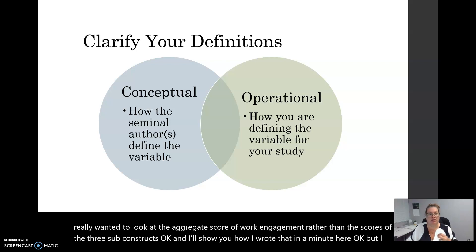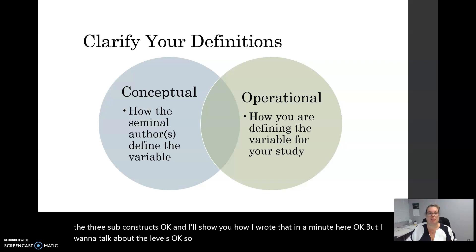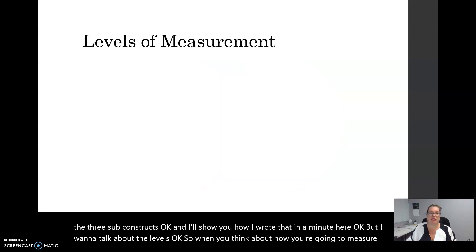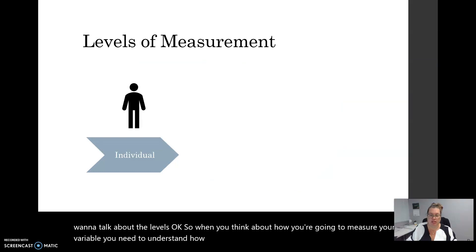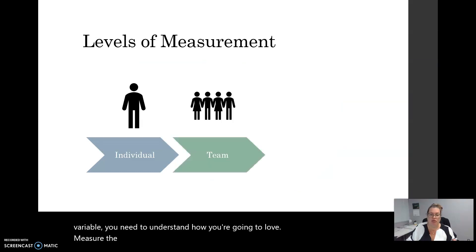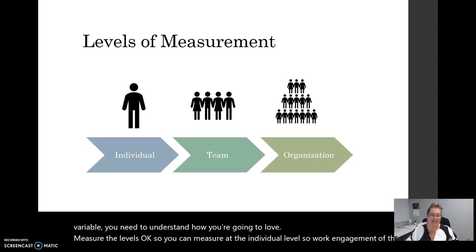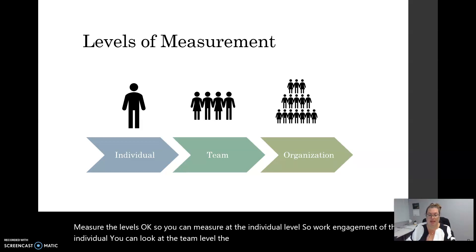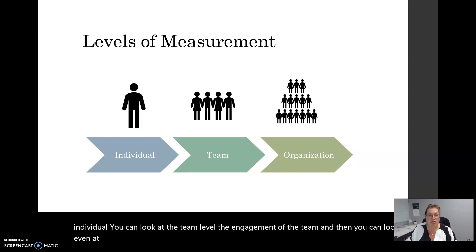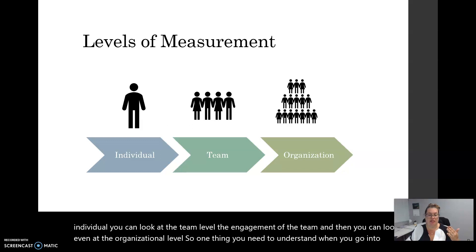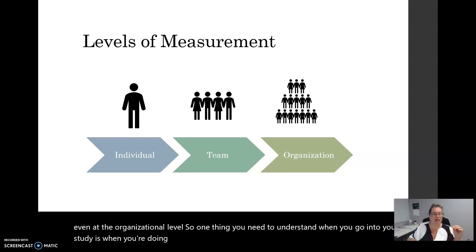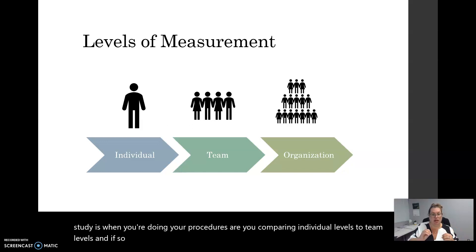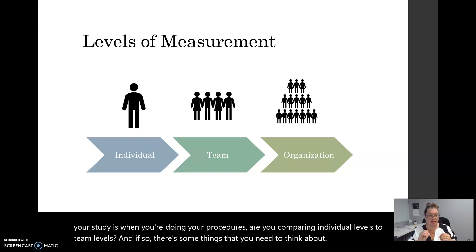I want to talk about the levels. When you think about how you're going to measure your variable, you need to understand how you're going to measure the levels. You can measure at the individual level — for example, work engagement of the individual. You can look at the team level, the engagement of the team, and then you can look at the organizational level. One thing you need to understand when doing your procedures is whether you are comparing individual levels to team levels, because if so, there are some things you need to think about when you get into that discussion.